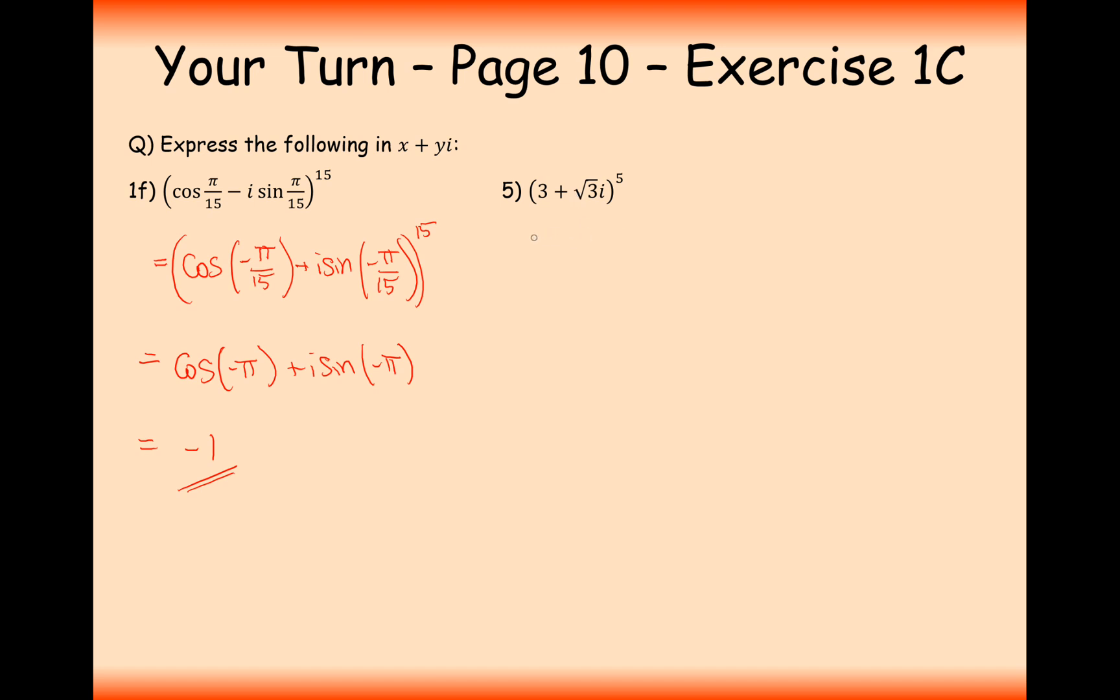Moving on to this one here, the first thing I'll do is work out the modulus and the arguments. The modulus of this is going to be 3 times, so 3 squared plus root 3 all squared. Let's do that on the calculator: 3 squared plus 3, that's going to be 2 root 3. The argument is going to be a tan inverse. Let's draw it out on the argand diagram: 3 across, root 3 up. So it's going to be root 3 on the opposite side, 3 on the adjacent side, so it's going to be root 3 over 3, and that's going to give us pi by 6. So we can change this question into 2 root 3 bracket cos pi by 6 plus i sine pi by 6 to the power of 5.